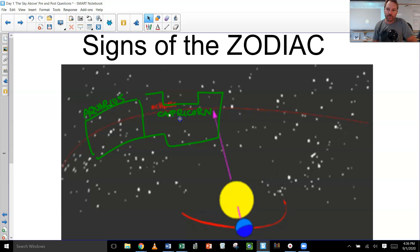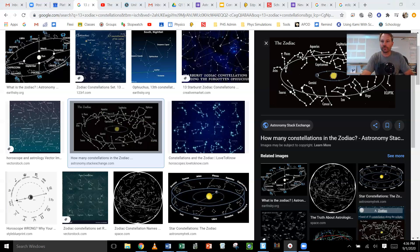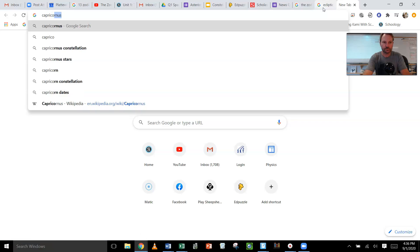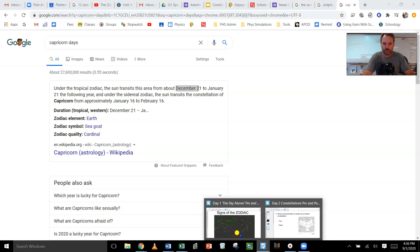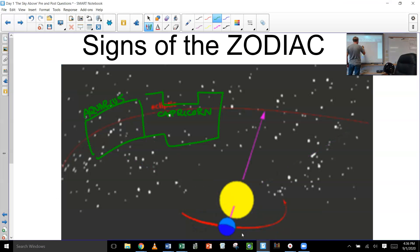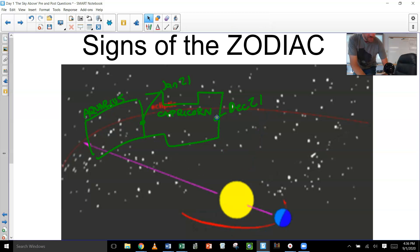It goes all the way around those 13. So there are certain days which the sun is in each of these constellations. So let's just look up the days for Capricorn. So it says from December 21st to January 21st. Because my birthday is on January 18th, it's in between here.